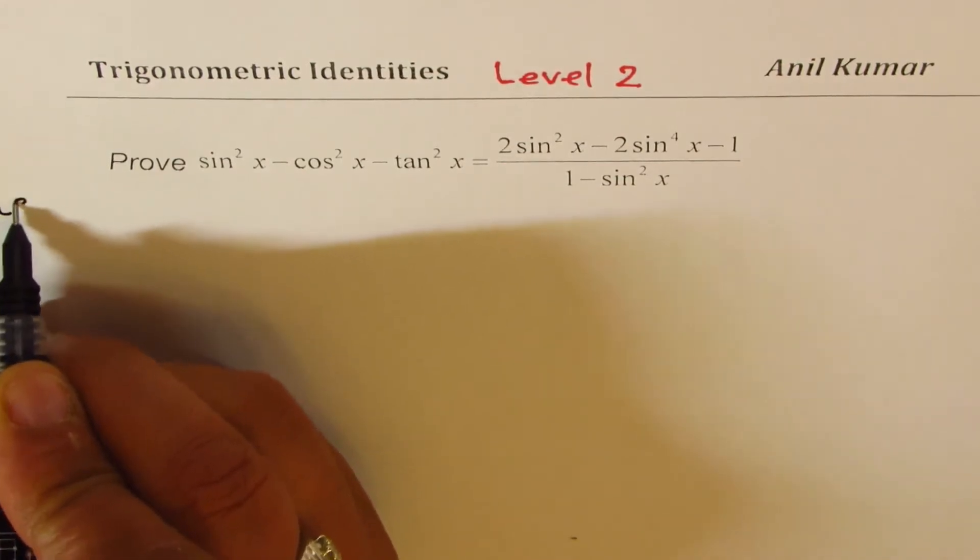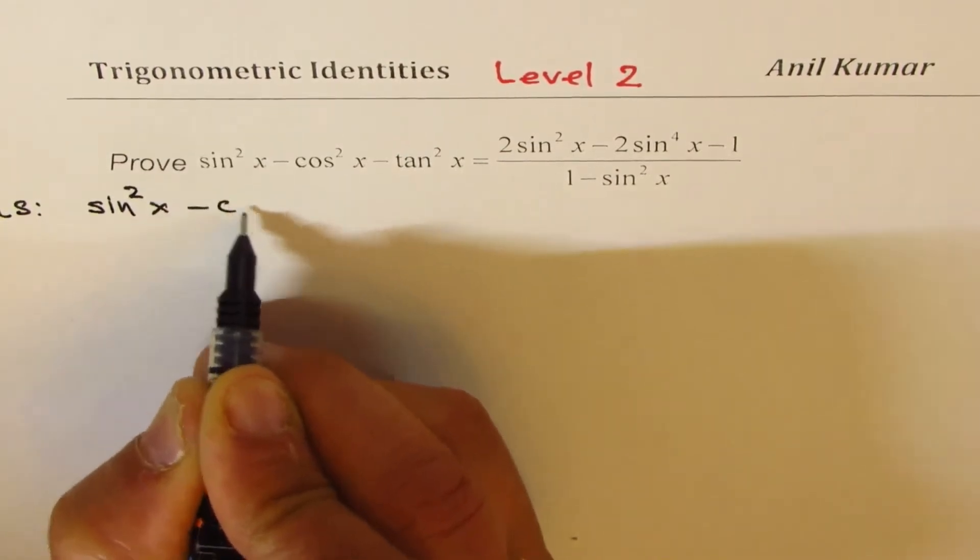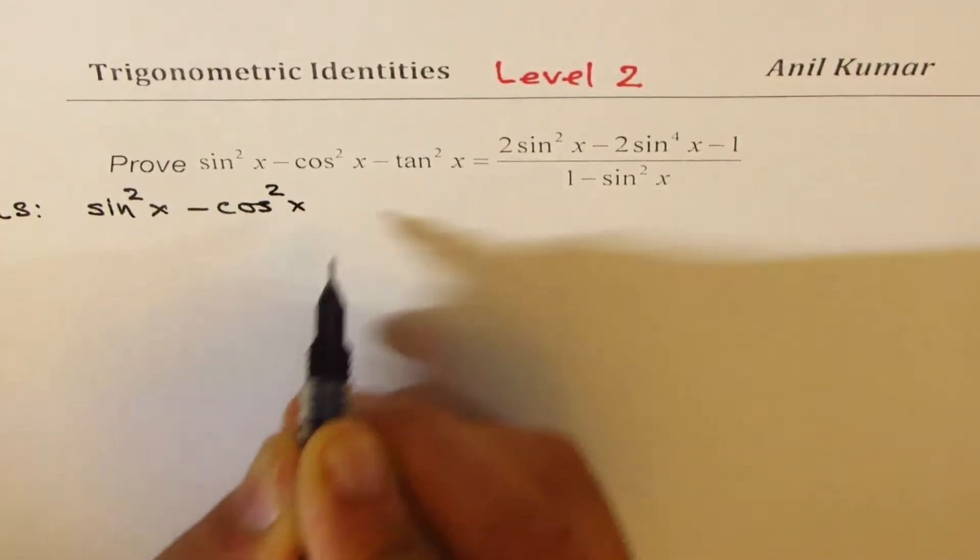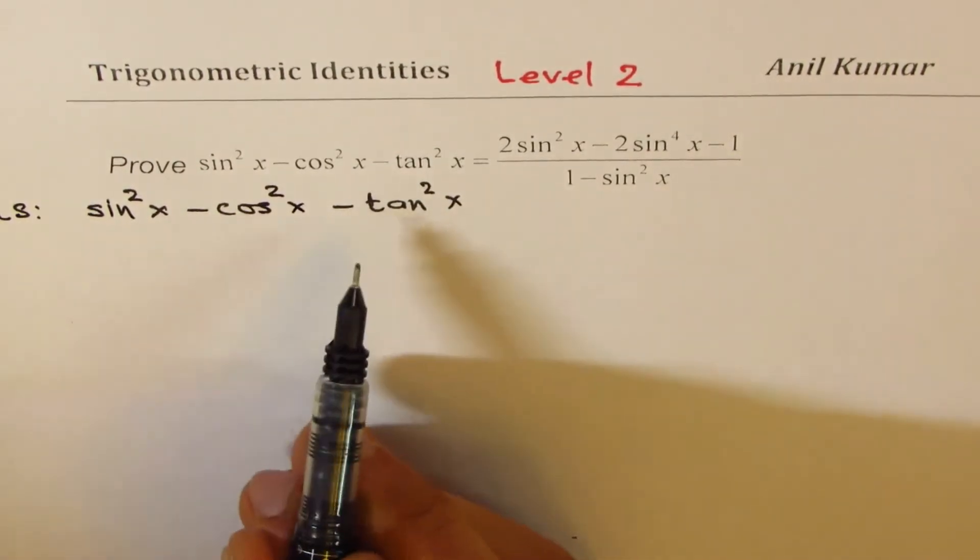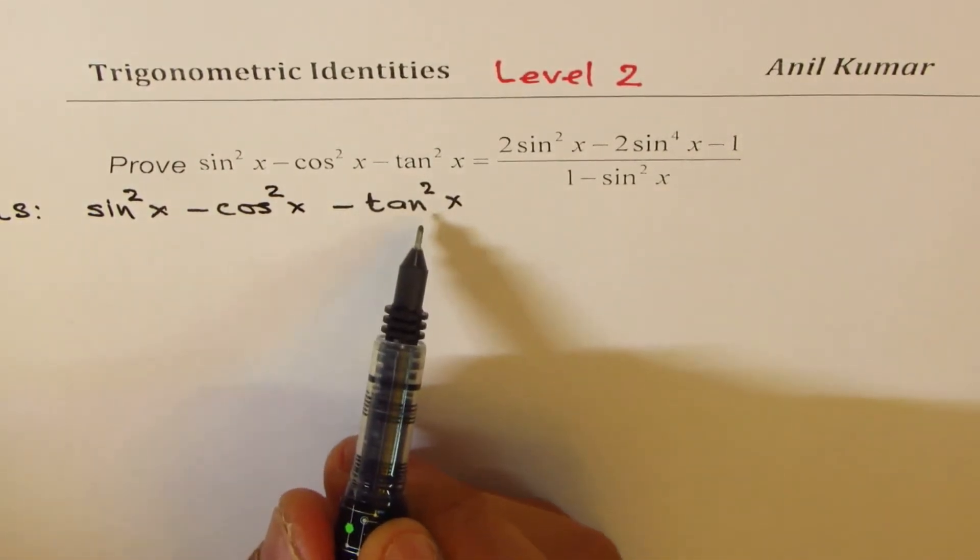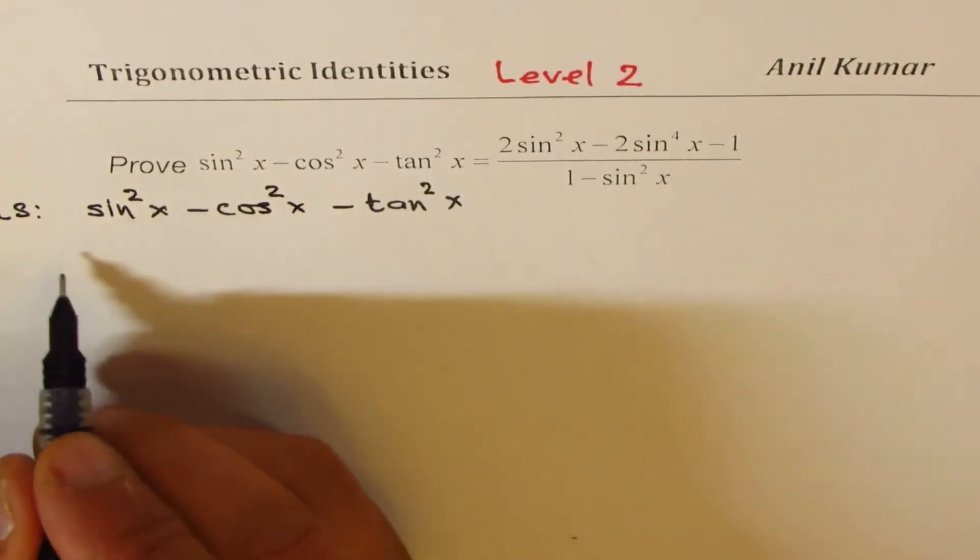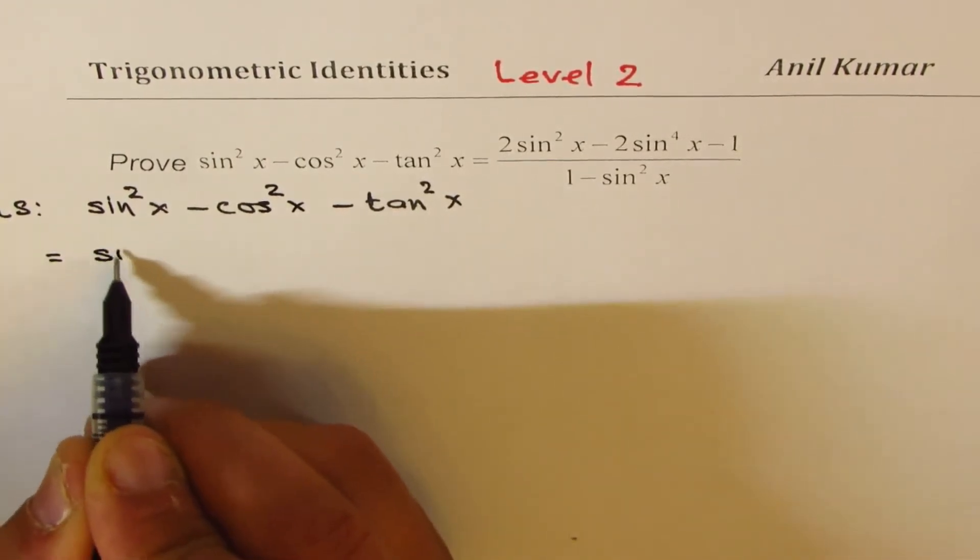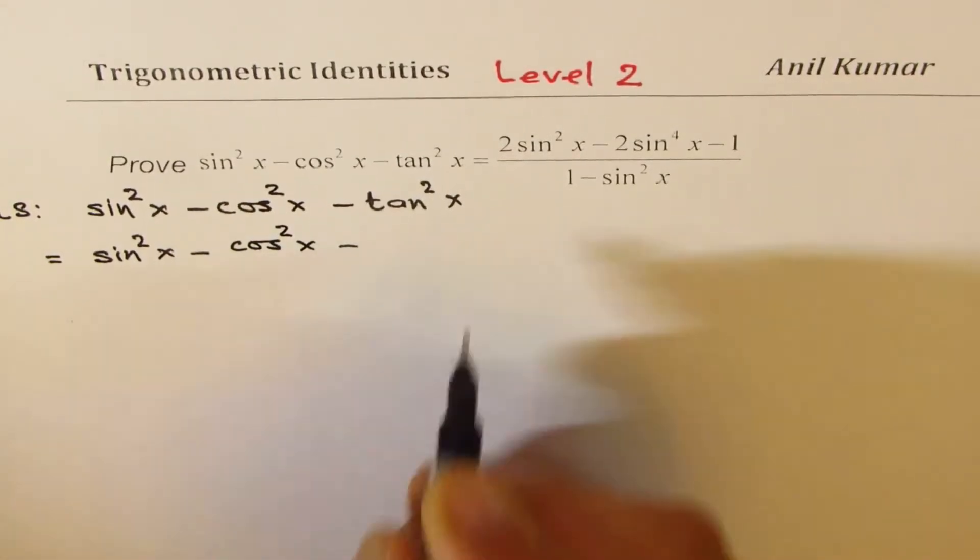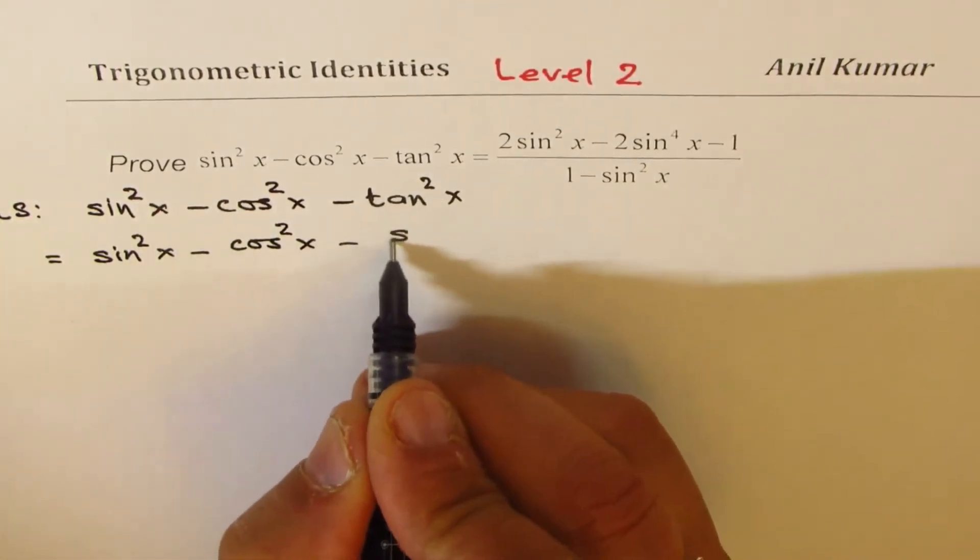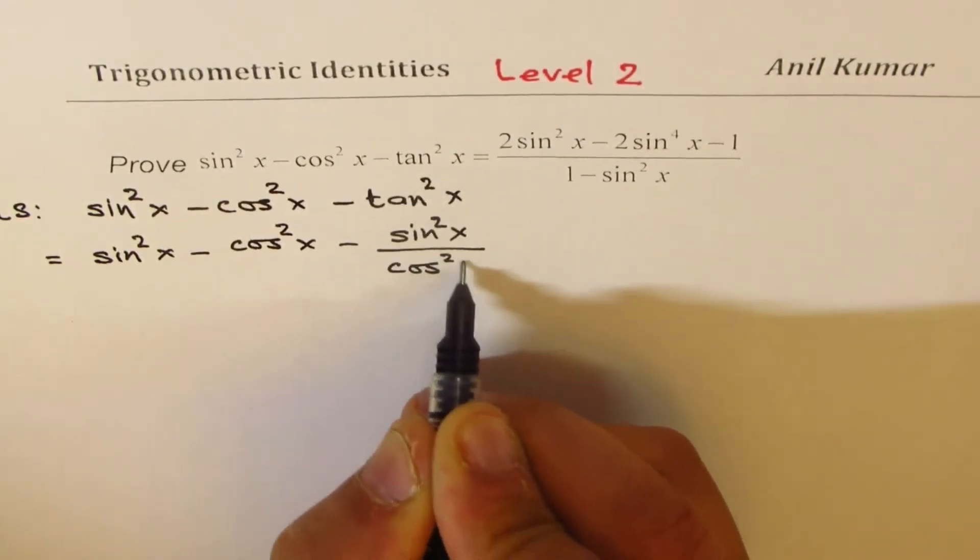We can actually begin with the left side, which is sin² x - cos² x - tan² x. Now tan² x can be written as sin² x over cos² x. So we could write this as equal to sin² x - cos² x - sin² x / cos² x.